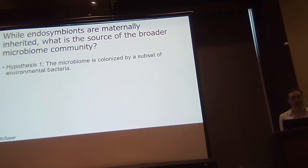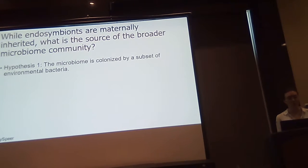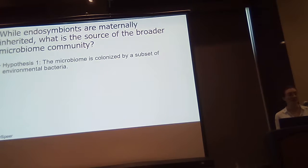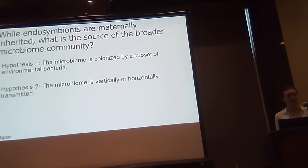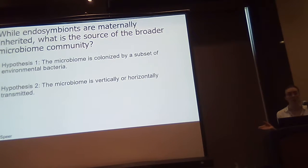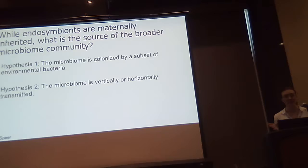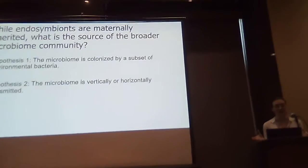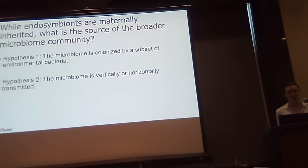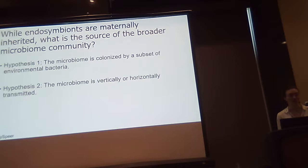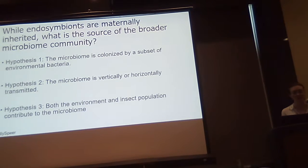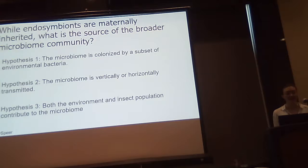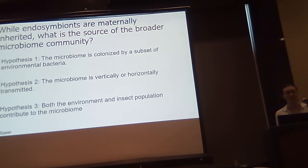One hypothesis is that this broader microbiome community is colonized by a subset of environmental bacteria. Another hypothesis is that the microbiome can be vertically or horizontally transmitted, either directly through the mother or by the population of insects that the individual lives with — so either paternal or maternal inoculation. The third hypothesis is that both the environment and insect population can contribute to the microbiome.